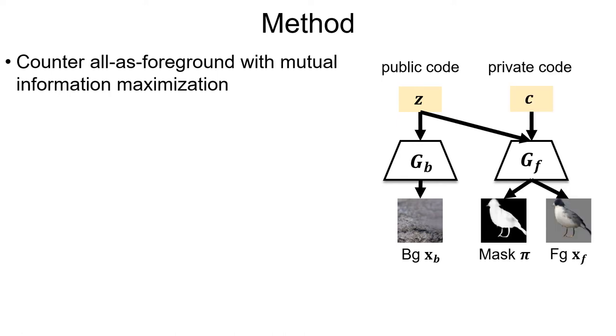In this paper, we propose to counter the trivial solution of all-as-foreground with mutual information maximization. Concretely, we introduce an asymmetric design to foreground and background generators. The background is only generated from the public code Z, while the foreground is generated from both public code Z and private code C.